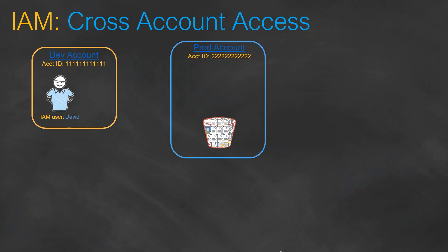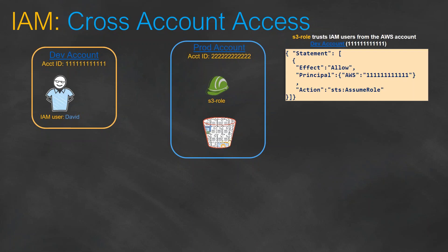The first thing we are going to do is create a role in the prod account. Let's say that this role is going to be called S3 role. For simplicity, it might be an S3 read access role or S3 full role — whichever permissions you want David to have. Let's call it S3 role.